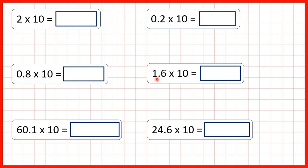Now we're going to learn how to multiply decimals by 10, but first let's think about multiplying whole numbers by 10. So our first question is 2 times 10. We know that the answer is 20, and you might have been told that if you're multiplying a whole number by 10 you can just put a zero on the end. That works for whole numbers, but it doesn't work for decimals.